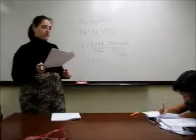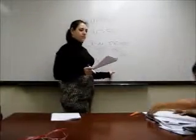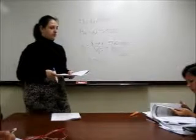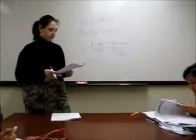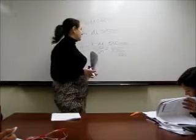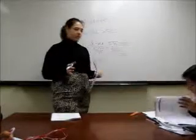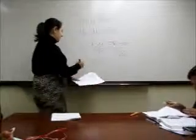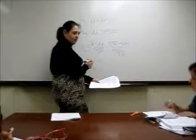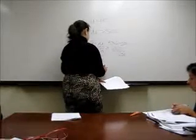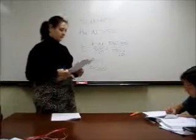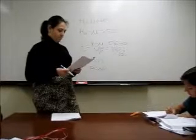Looking up t = 3.25 with 19 degrees of freedom, it falls between 0.001 and 0.0025. We have a one-sided hypothesis, so we're not going to multiply our p-value. We conclude p is less than 0.005 — more precisely, between 0.001 and 0.0025. Either way, p is less than 0.05, so we reject our null. It's one-sided, confirmed.